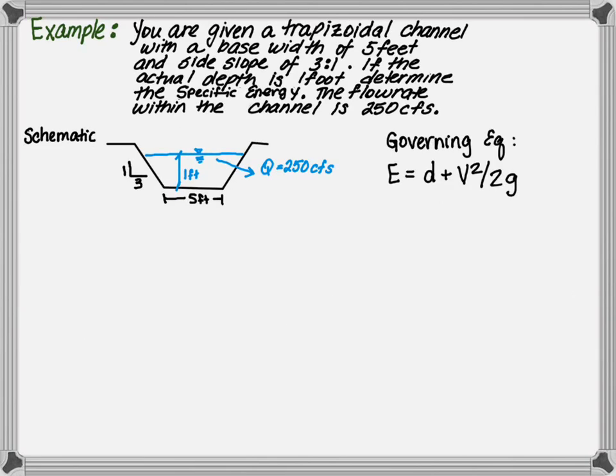Now let's look at the same example, where we have a base width of 5 feet, side slopes of 3 to 1, a flow depth of 1, and a flow rate of 250 CFS. This time, we want to determine the specific energy.